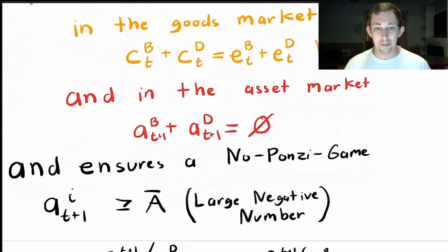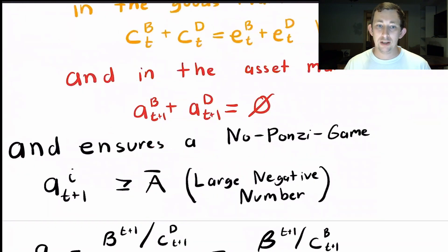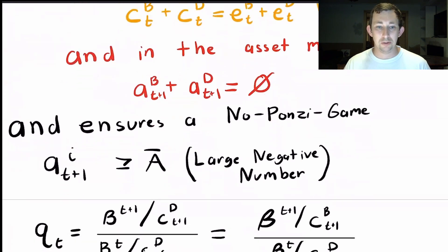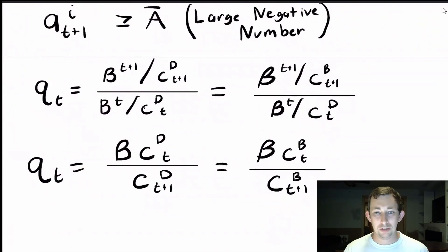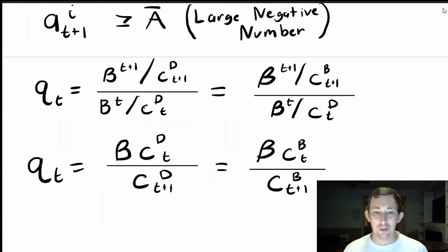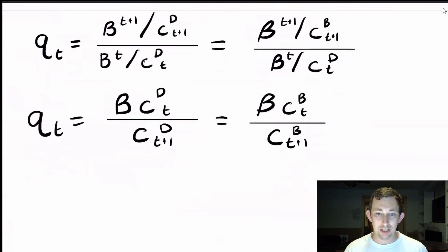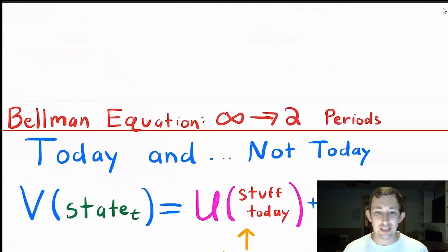We also need market clearing in the asset market in every period, where the number of assets being sold and bought is exactly the same. We also need to ensure that neither Bill nor Dave — the two people in this economy — go into infinite debt; we call that the no-Ponzi-game condition. From the Euler equation, the price of a bond equals beta times the ratio of the marginal utilities for each person.